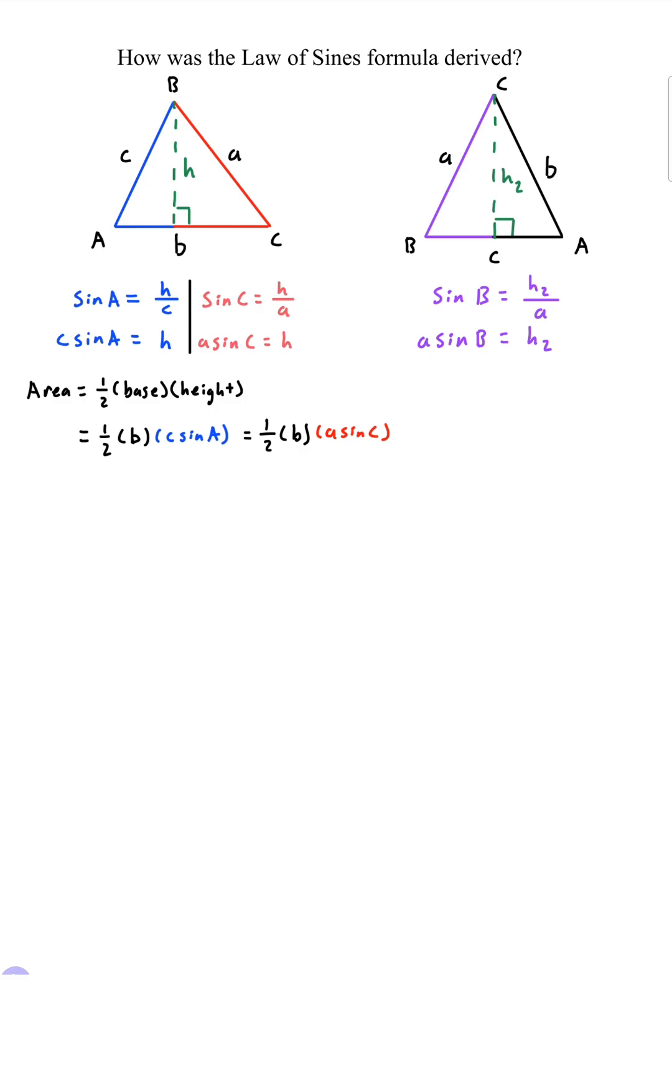Now we look at the second triangle since these two triangles are the same they should have the same area. So this triangle will have an area of one half base this time the base is c not b times the height which is a sine of B.